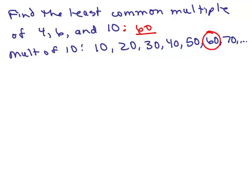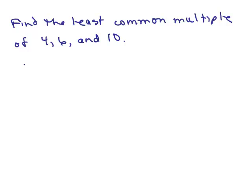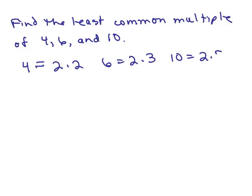This is a lengthy process, having to list all the multiples. Now I'm going to show you the most common way taught in books: using prime factorization. We're going to take the same problem and find the least common multiple of 4, 6, and 10. We list the prime factorization for each: 4 is 2 times 2, 6 is 2 times 3, and 10 is 2 times 5.